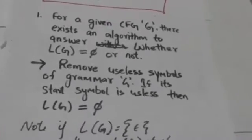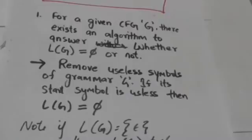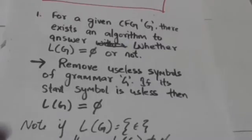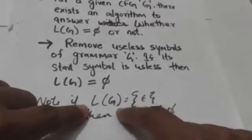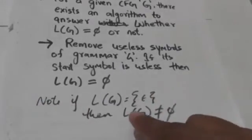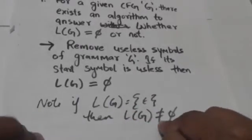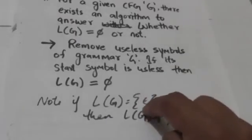To determine if the language of a given context free grammar G is empty, we remove all useless symbols of grammar G. If the start symbol is a useless symbol in grammar G, then its language is definitely empty. Note that if the language contains only the empty string, we say the language is not empty because it contains one string — the empty string.